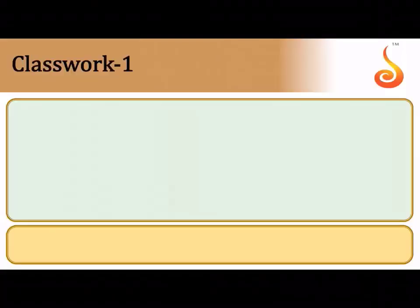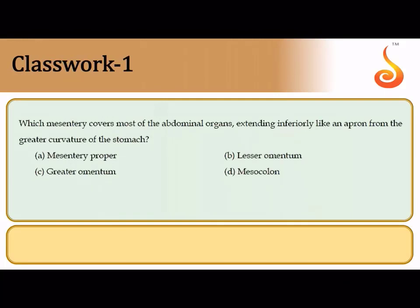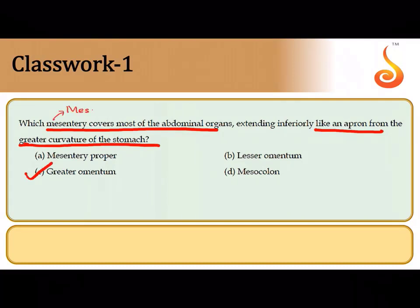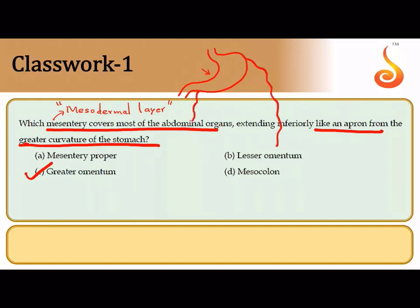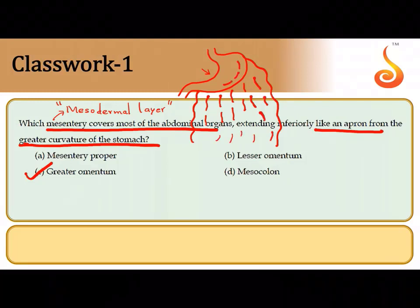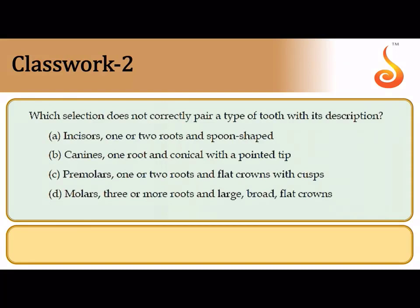Moving on to Digestion and Absorption: the mesentery that covers most abdominal organs, extending inferiorly like an apron from the greater curvature of the stomach, is the greater omentum. Mesentery is a mesodermal layer in the abdominal cavity. This mesodermal membrane emerging from the greater curvature of the stomach, like a curtain covering the small and large intestines behind it, is referred to as the greater omentum.